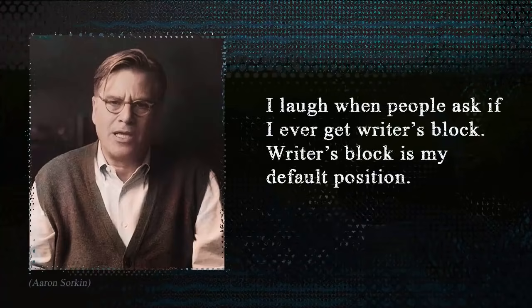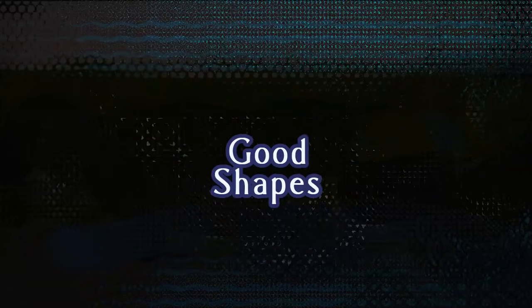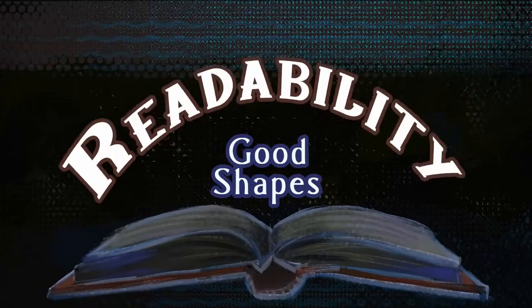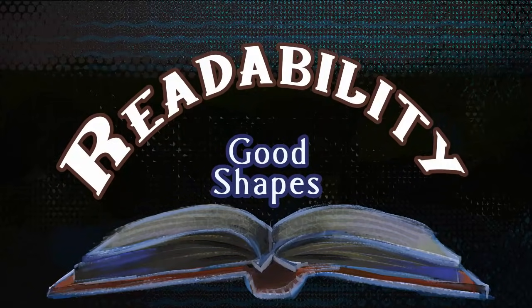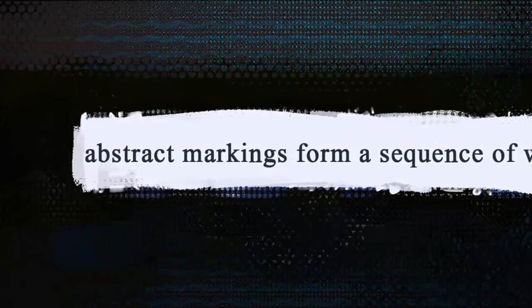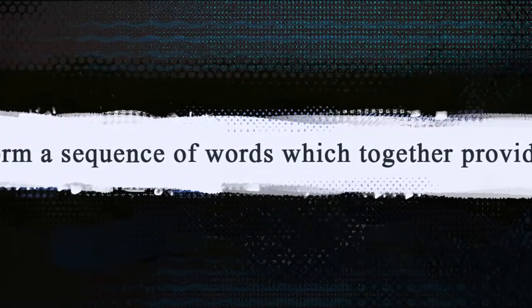Screenwriter Aaron Sorkin says, 'I laugh when people ask if I ever get writer's block. Writer's block is my default position.' In this episode, we'll be looking at good shapes, a topic found in the broader chapter of readability. We read pictures in much the same way as we read words — a series of abstract markings forming a sequence that provides meaning. A painting does just the same thing, only with shapes instead.